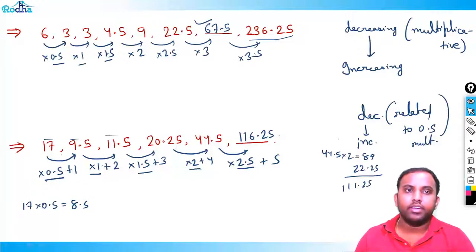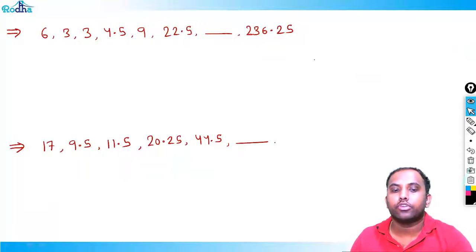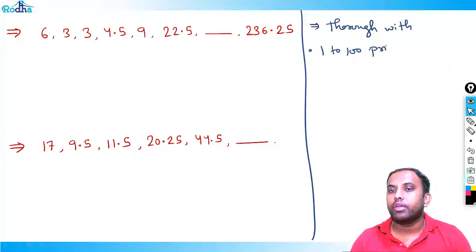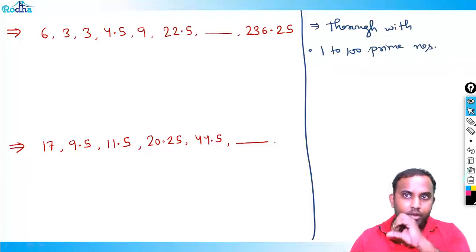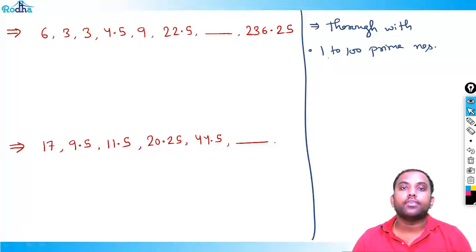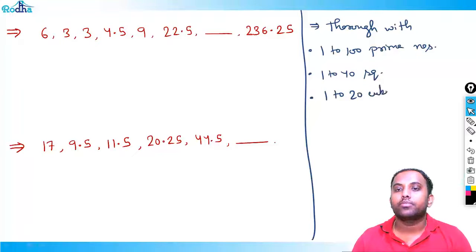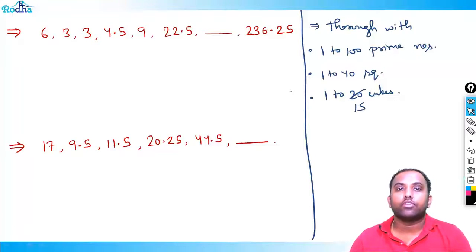I hope you got it. This is a good question based on ×0.5 multiplication. If you want to be good at number series, you should be thorough with prime numbers from 1 to 100 — know which they are, how many there are, and the largest ones: 97, 89, 83, 79, 73, 71, 67, 61. We'll continue in the next video. Thank you.